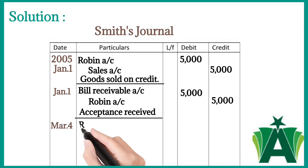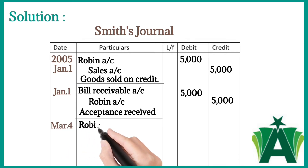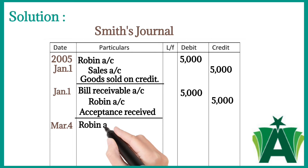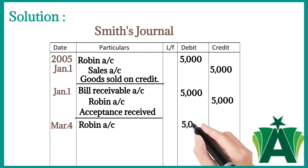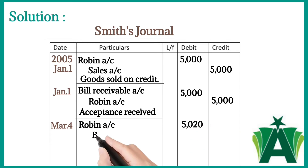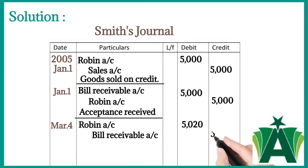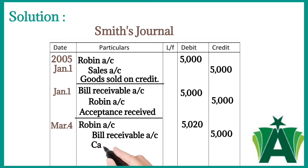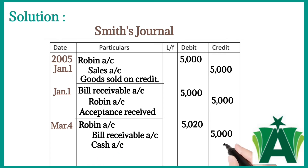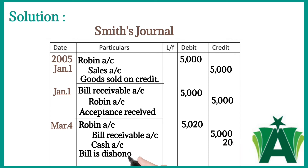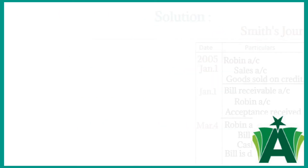On the due date, the bill is dishonored and Smith paid twenty dollars as noting charges. Robin again became debtor: Robin account is debited with five thousand and twenty dollars. Bill Receivable account is credited with five thousand dollars because asset decreased, and Cash account is also credited with twenty dollars because cash decreased.